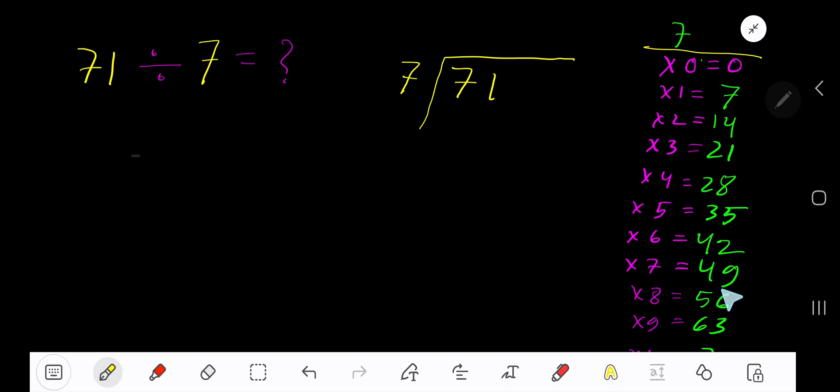21 plus 7 is 28. This process continues. Now, 7 goes into 7 how many times? 7 goes into 7 one time. 1 times 7 is 7. Subtract to get 0. Bring down the next digit, 1. This gives us 10.